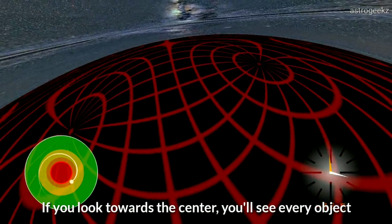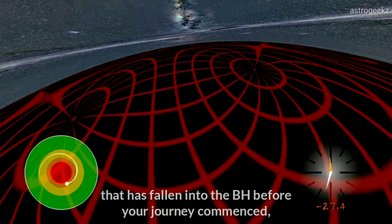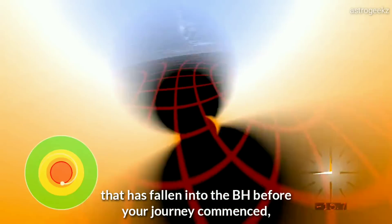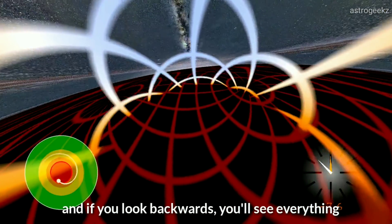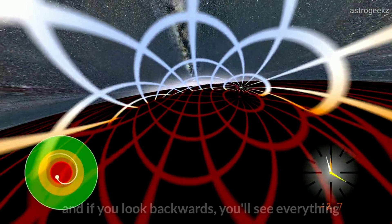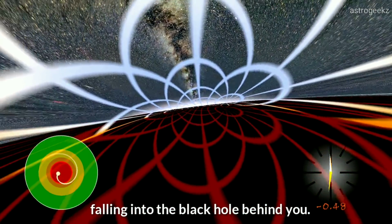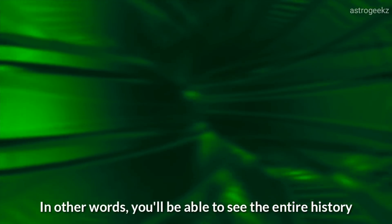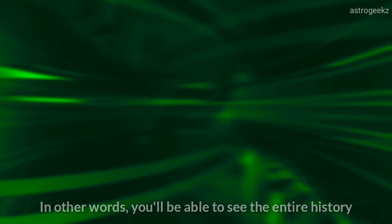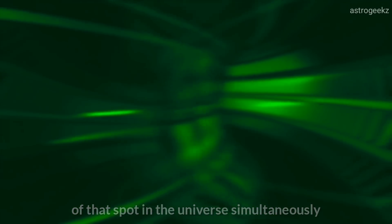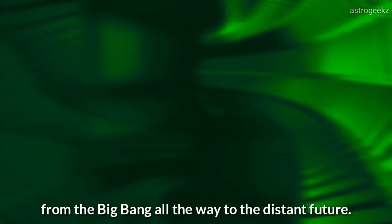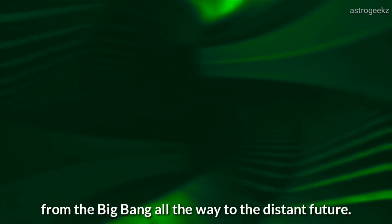If you look towards the center, you will see every object that has fallen into the black hole before your journey commenced. And if you look backwards, you will see everything falling into the black hole behind you. In other words, you'll be able to see the entire history of that spot in the universe simultaneously from the big bang, all the way to the distant future.